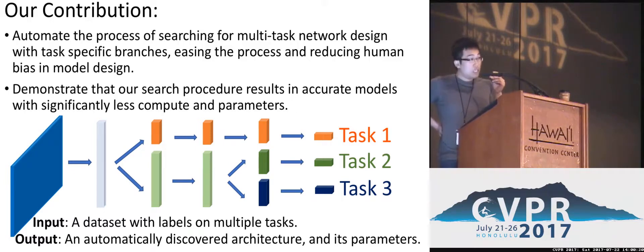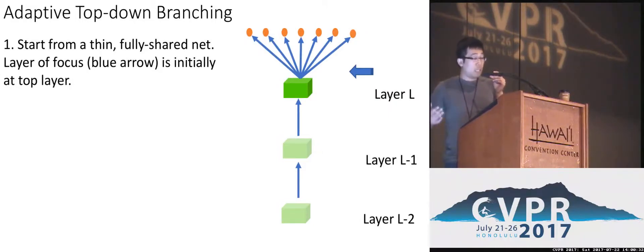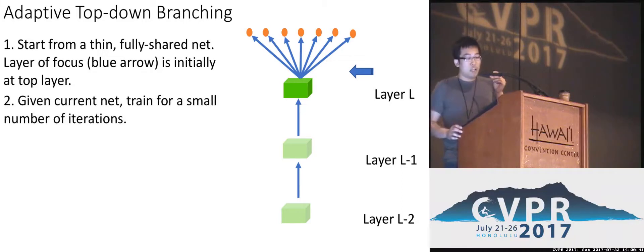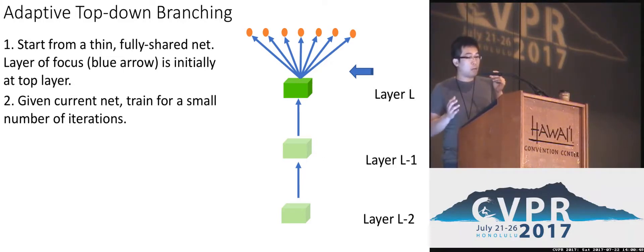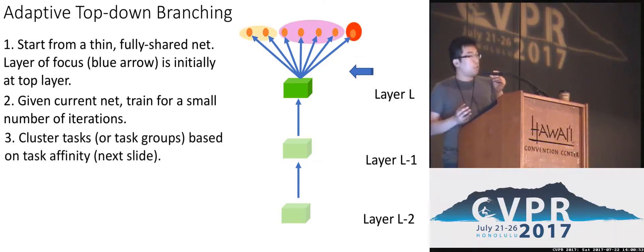In general, the input of our algorithm is a dataset with labels on multiple tasks, and the output is an automatically discovered architecture that reflects the synergy of tasks. Our algorithm is basically an adaptive top-down branching. We start from a very thin and fully shared network, focusing first on the output layer — shown as layer L here. Given the current network, we train for a small number of iterations. The output of this network then tells us something about how tasks are related, and we use this information to create a task affinity matrix.